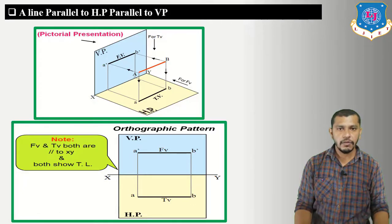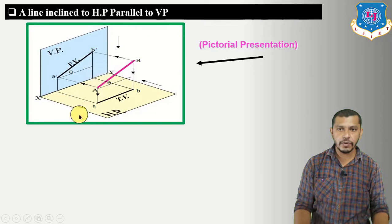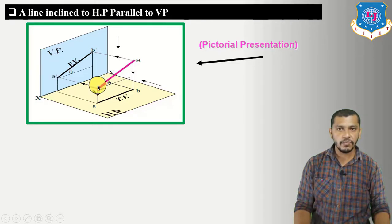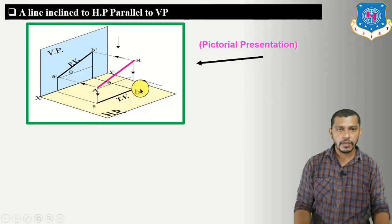Case 3 — a line inclined to HP, parallel to VP. The pictorial presentation shows line AB inclined to the horizontal plane at angle theta — the angle of inclination with HP — and parallel to the vertical plane. To draw the top view, we draw projection lines perpendicular to the horizontal plane from A and B, getting the plan of each point. Connecting them gives the top view AB.